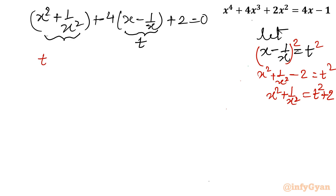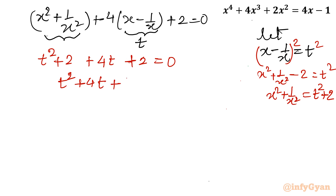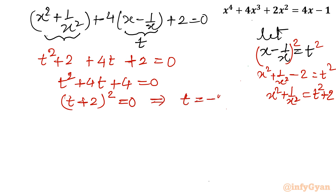Substituting back, I write (t² + 2) plus 4t plus 2 equals 0, which gives the quadratic t² plus 4t plus 4 equals 0. This is a perfect square: (t + 2)² equals 0, so t equals minus 2 is the solution with multiplicity 2.